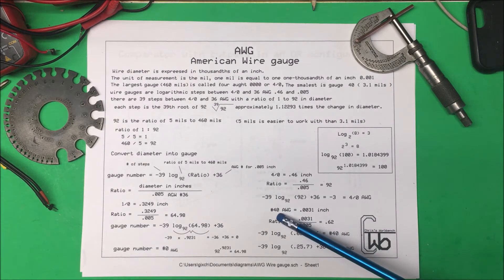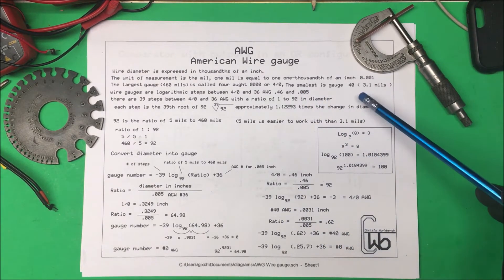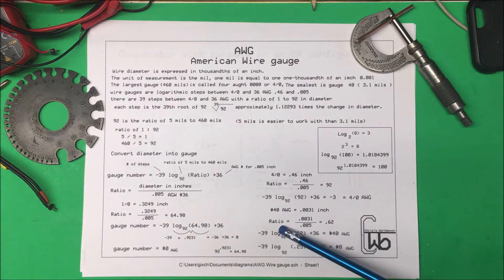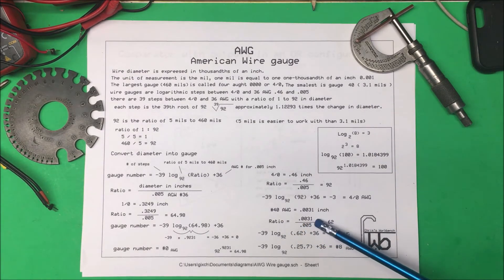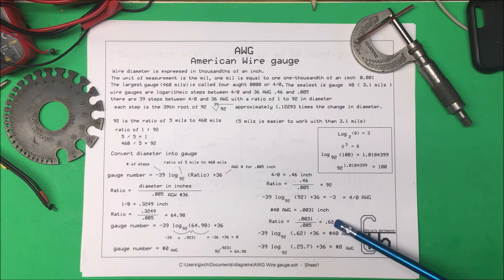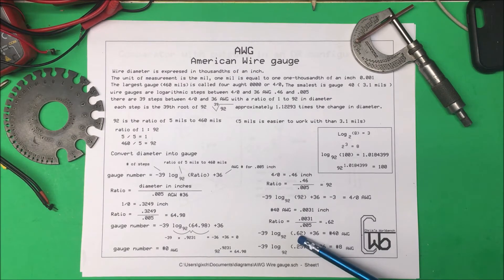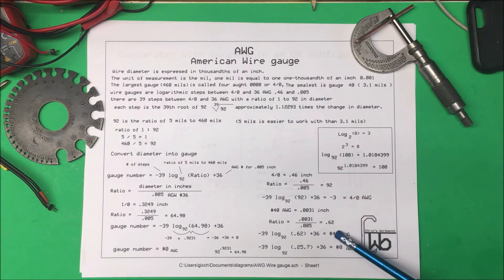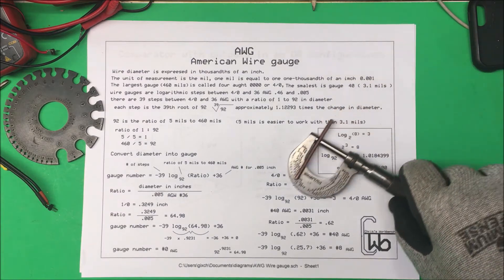Now 40 gauge wasn't even on here. 40 is 3.1 mils so we take our ratio of .005 into 3.1 mils and it comes out to 0.62, and if we put 0.62 into the formula it comes out to 40 AGW so it works down to that.